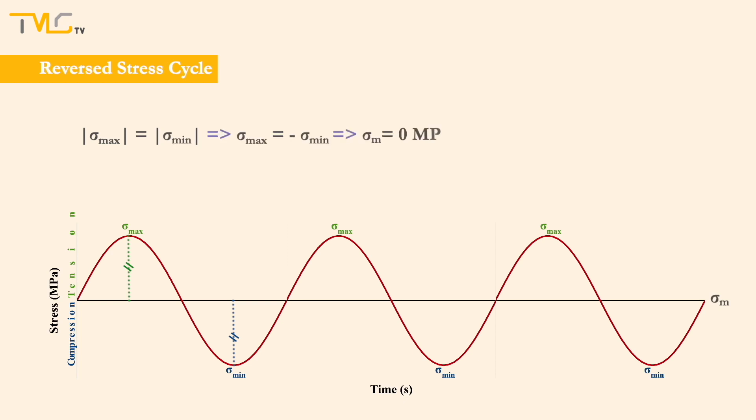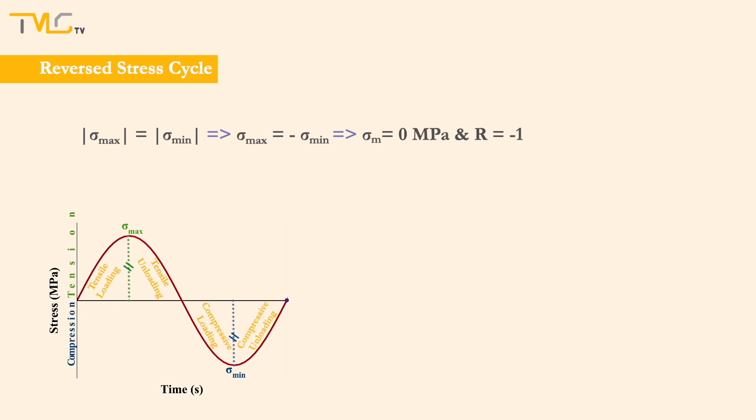Therefore, in reversed stress cycles, mean stress is equal to 0 MPa, and the stress ratio is equal to minus 1. One fatigue cycle is composed of tensile loading, tensile unloading, compressive loading, and compressive unloading, for a reversed stress cycle.